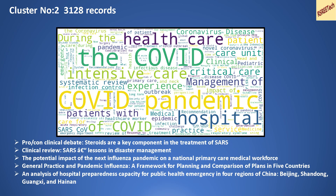Cluster number 2 has close to 3,000 records. The word cloud highlights 'pandemic', 'hospital', 'medical', 'epidemic', and 'health care'. This cluster deals with how the pandemic is managed. The titles confirm this — they include topics like 'lessons in disaster management', 'the potential impact of the next pandemic', and 'general practice during the pandemic'.